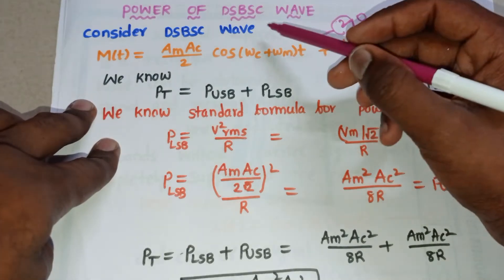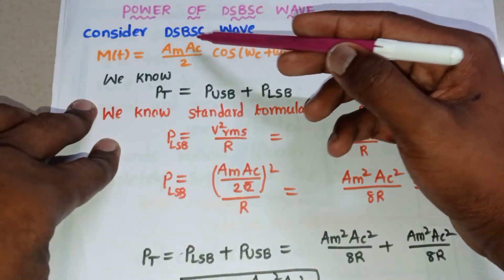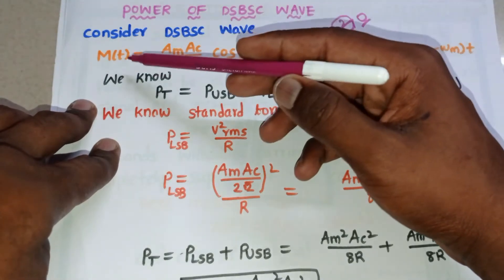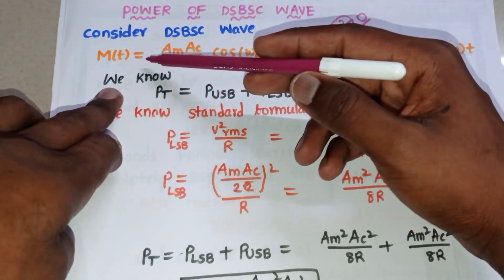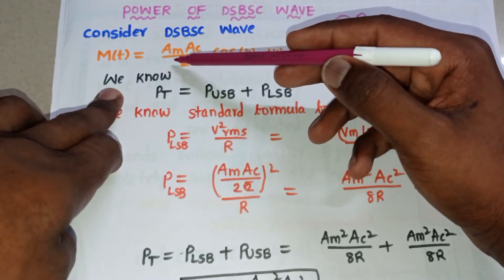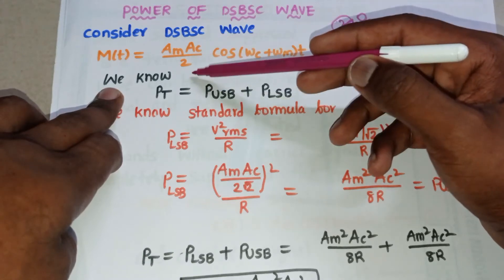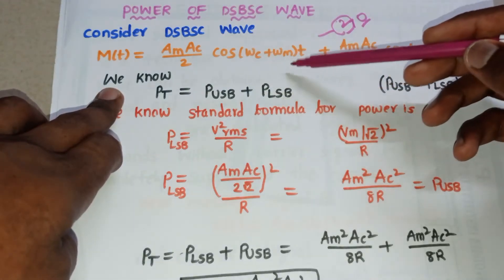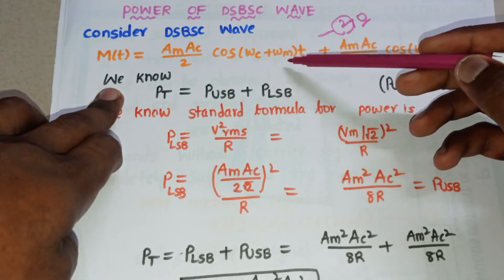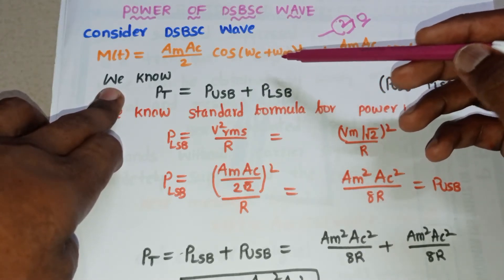To calculate the power of the DSBSC wave, consider the standard form: m(t) = (Am × Ac / 2) × cos(ωc + ωm)t, where Am is the amplitude of the message signal, Ac is the amplitude of the carrier signal, and (ωc + ωm) is the upper frequency band.